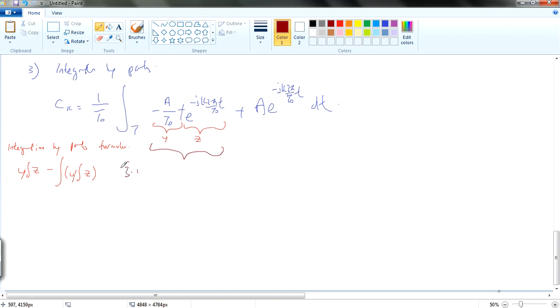Let's integrate in this part. We rename this 3.1. So we have minus A T0 and then t, and then we integrate this portion, the coefficient which is e^(-jk 2π/T0 t).